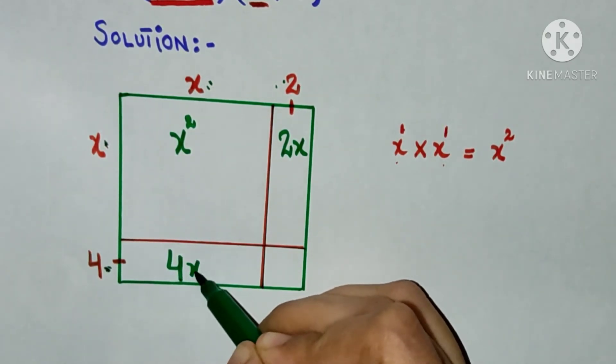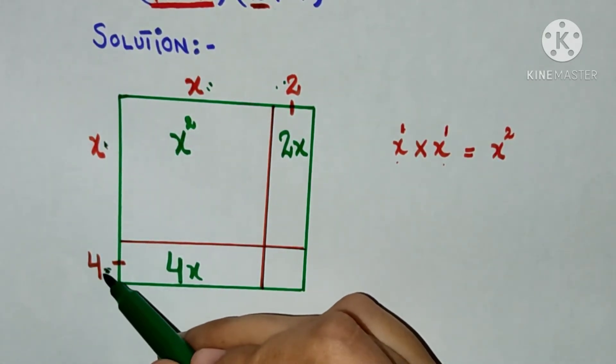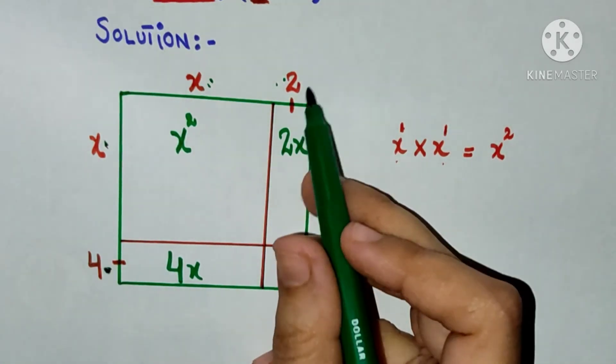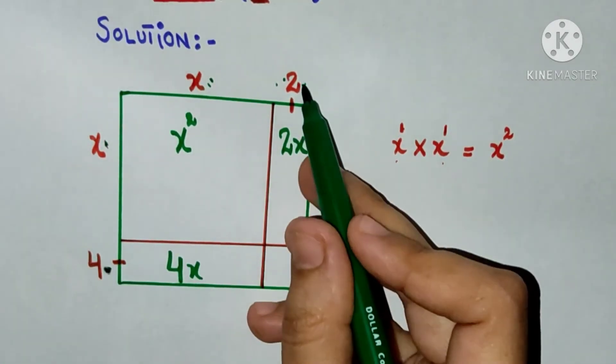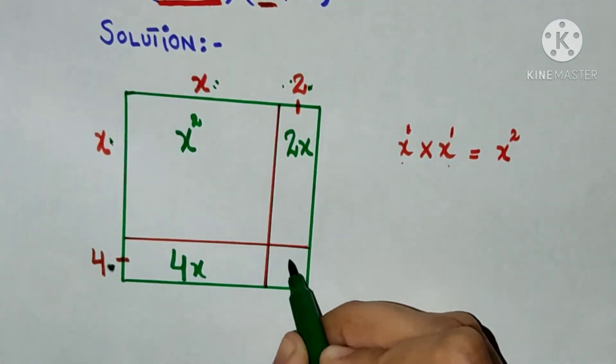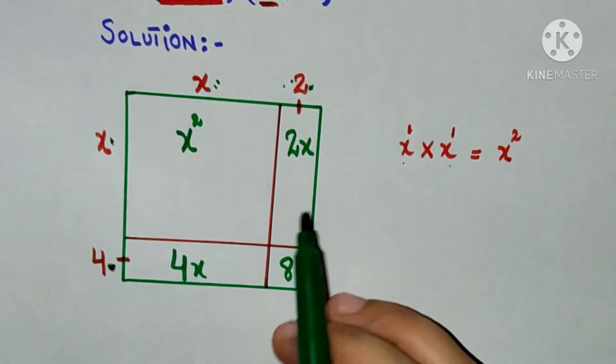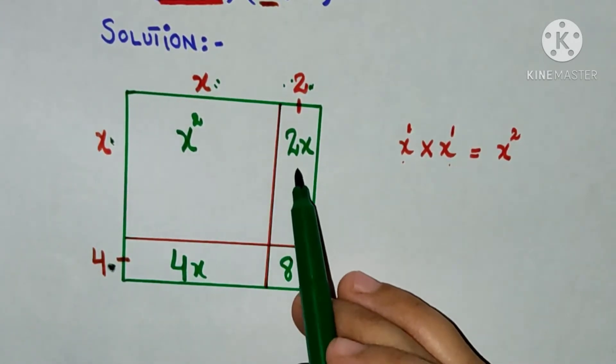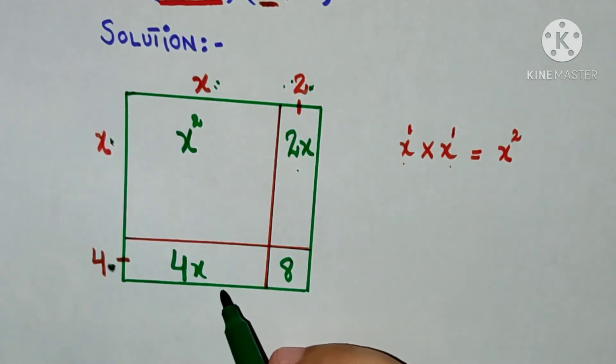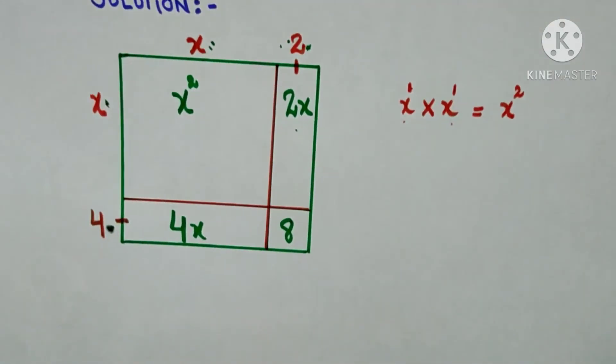Now I will multiply this 4 by 2. 4 multiply by 2, 4 times 2 is 8. Now the values which are inside the box, I will write it in an equation by writing the plus sign between them.